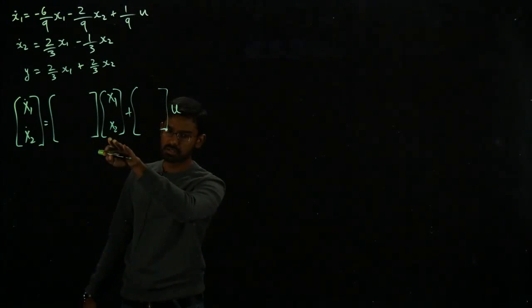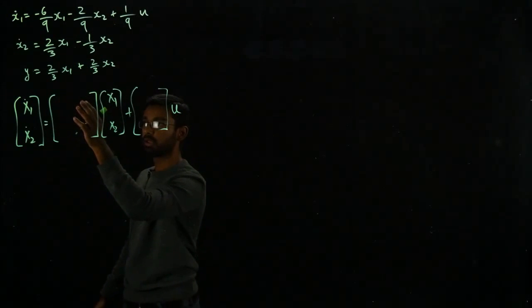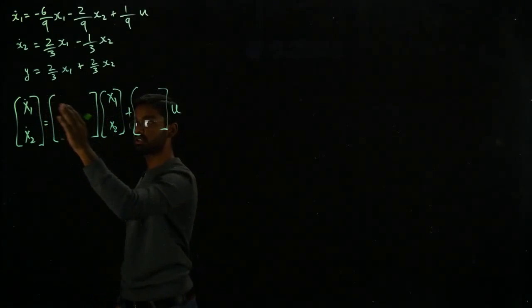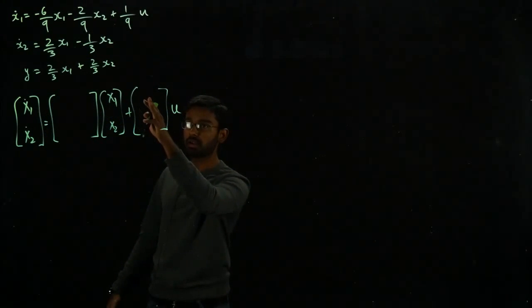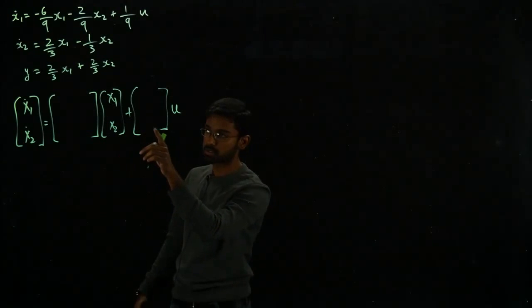Obviously this is two by one. I need a two by two matrix here so that I can just plug in the values and the linear combination will give me this vector. And here it should be two by one because I'm adding, I can only add matrices or vectors of the same dimension.